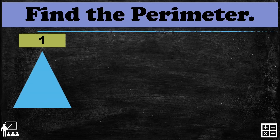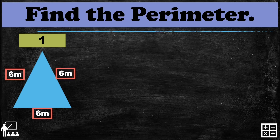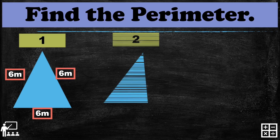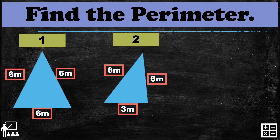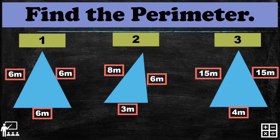Now it's activity time! Find the perimeter of each triangle. Number one has sides 6 meters, 6 meters, and 6 meters. Number two has sides 8 meters, 6 meters, and 3 meters. Number three has sides 15 meters, 15 meters, and 4 meters. Check your answers in the comment box — I hope you learned something about how to get the perimeter of a triangle!